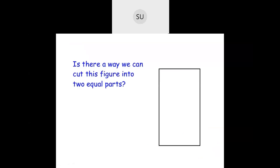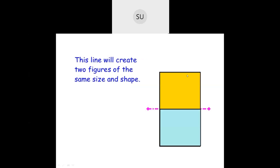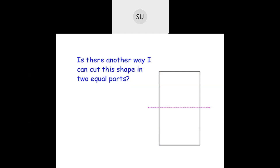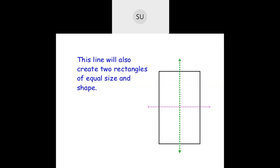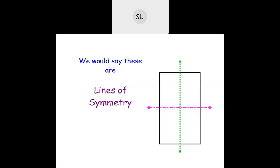We saw what are lines of symmetry or mirror lines. Here the question is: is there a way you can cut this figure into two equal parts? You can cut this figure in half to create two identical figures. We cut this rectangle in the middle to create two equal squares like this. The line creates two figures of the same shape and size. You can also cut this across the rectangle - this line also creates two rectangles of equal size and shape. One is the mirror half of the other, so the yellow and pink rectangles are of identical shape and size.